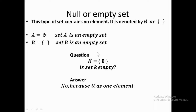This question is very common in set theory: if set K equals {0}, is it an empty set? The answer is no — it is not empty, because the zero inside the brackets is an element. Set K has one element, which is zero. A set is only empty when it has no element at all. Since zero is an element, set K is not empty.